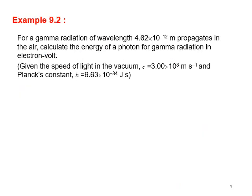Example 9.2: gamma radiation of wavelength 4.62 × 10⁻¹² meters propagates in air. Calculate the energy of the photon in electron volts. Given: speed of light in a vacuum is 3 × 10⁸ m/s, and Planck's constant is 6.63 × 10⁻³⁴ J·s.